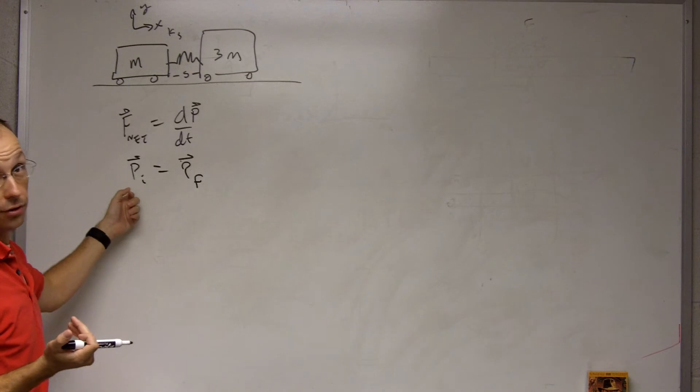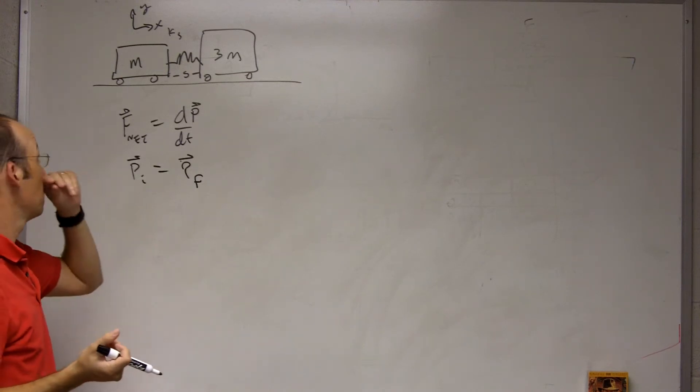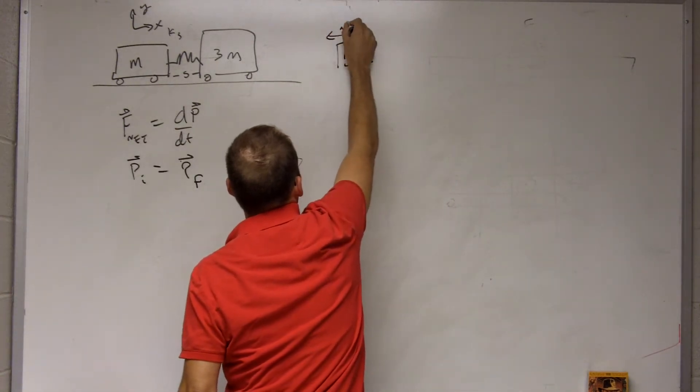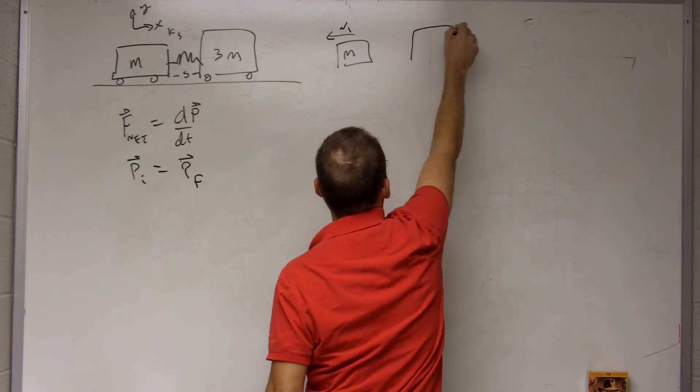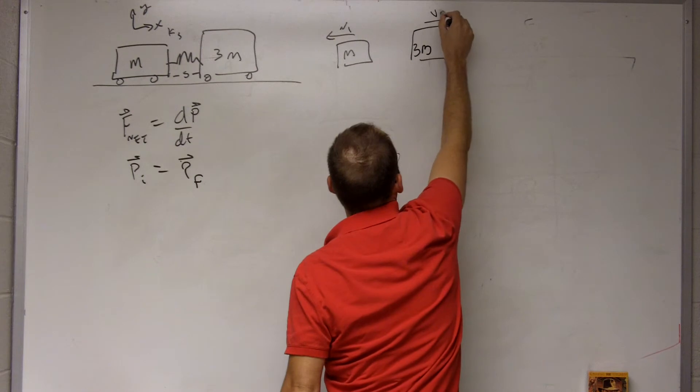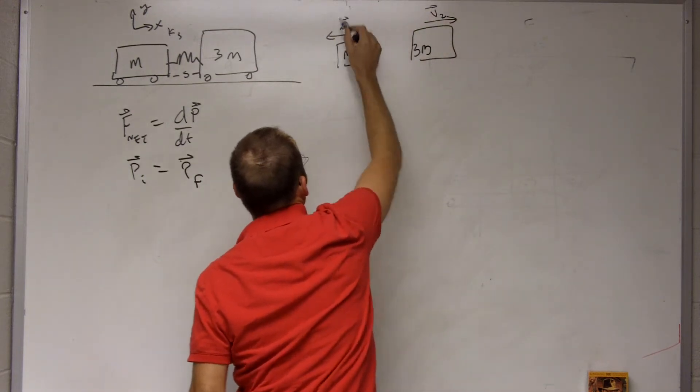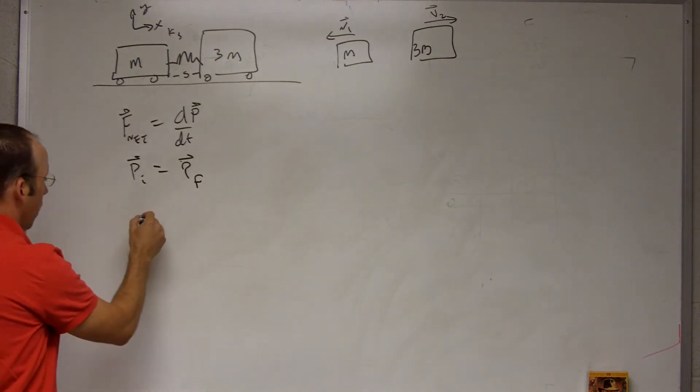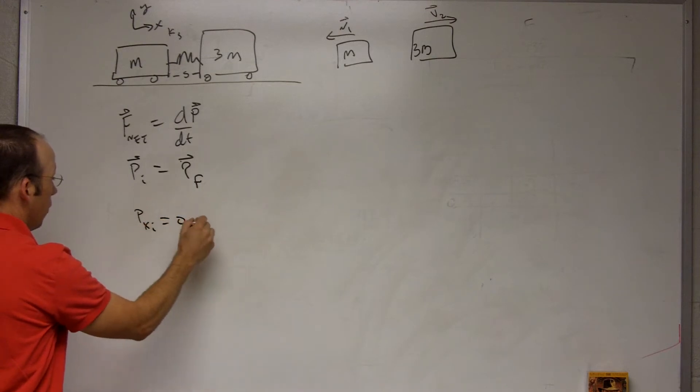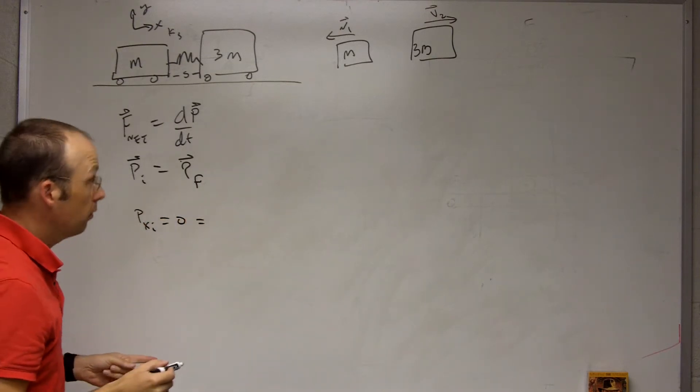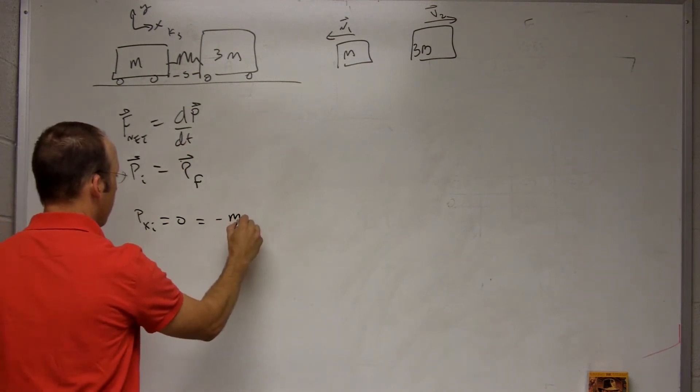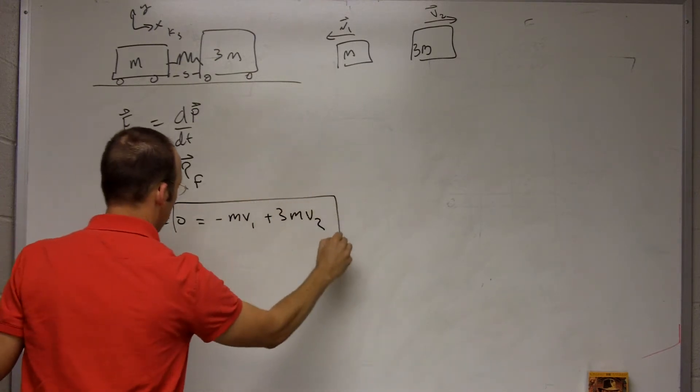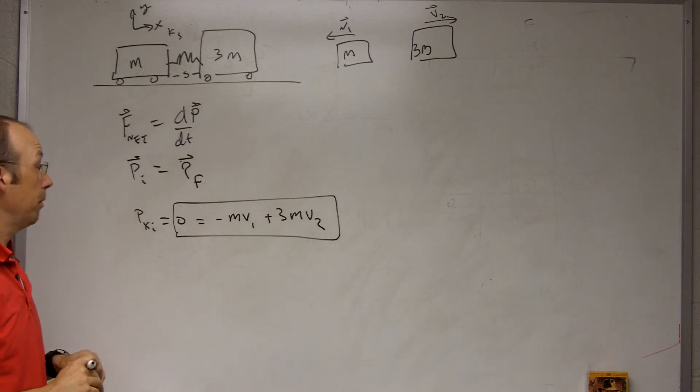If I call this the X, Y direction, then really I can say the initial momentum in the X direction is the initial momentum in the Y direction. Now, initially, there's no momentum. They're at rest. Let me draw this little picture after. Let's call this V1 and this 3M, we'll call that V2. In the X direction before the collision, P_X initial equals zero equals P_X final, and I can write that in the X direction as minus MV1 plus 3MV2. So that's just your conservation of momentum expression.